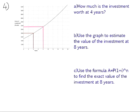In question 4, you were given a graph showing the value of an investment of 1,500 rand over a period of time growing at 4.5% per annum. Number A, how much is the investment worth at 4 years?